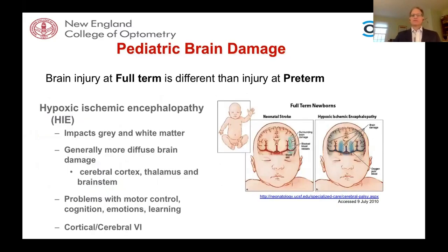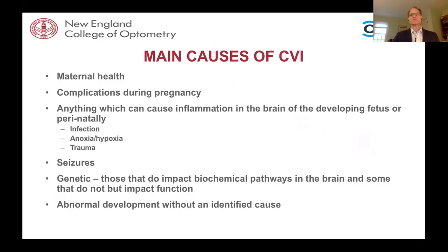Brain injury at full term is a little different. The connections are tighter, the blood vessels more developed, and the immune response more nuanced. However, it's still somewhat immature and there can still be areas of brain damage. At full term it impacts gray and white matter, can be more diffuse than PVL, and can also result in problems with motor control, cognition, emotions, learning, and cerebral visual impairment.